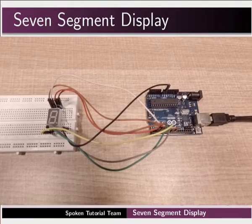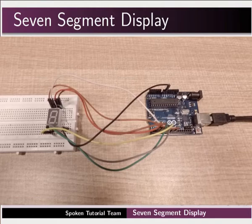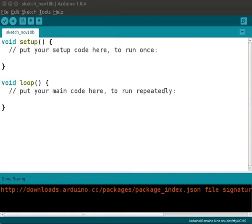This is the live setup of the connection as shown in the circuit diagram. Now, we will write a program in the Arduino IDE. Let's switch to the Arduino IDE. First, we will write a program to blink the LEDs in the 7-segment display.